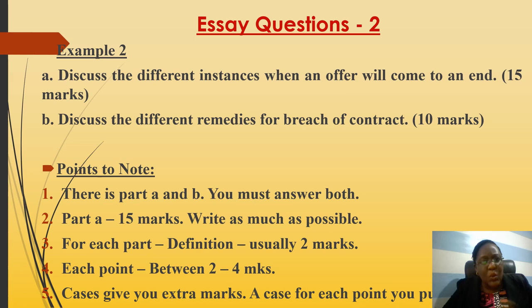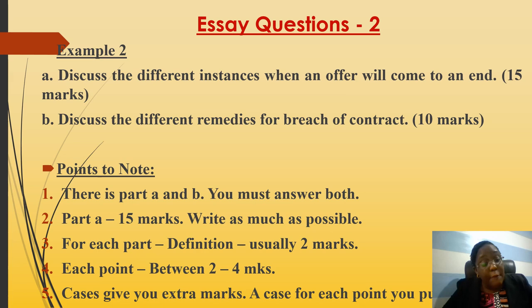For each part, start with a definition — for example, 'what is an offer?' earns about two marks, or 'what is breach of contract?' For part A and part B, give a definition then explain your points with cases or sections of the law for extra marks. Each point under part A is typically worth two to four marks, so write as many points as possible. For each point, include a supporting case — for example, if discussing how death terminates an offer, cite a case showing that.